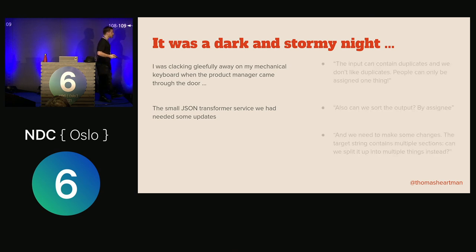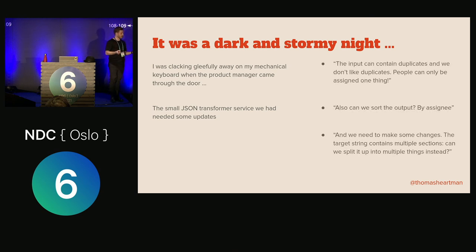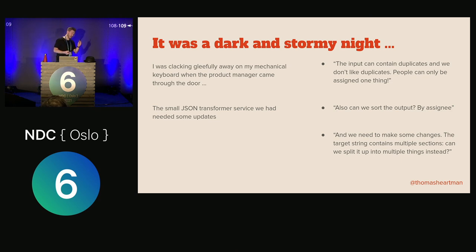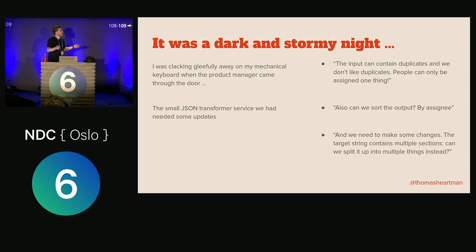But now, as product is want to do, they give you additional requirements. For the sake of this story, this piece of JSON is a list of tickets — objects that need to be done. Each ticket has a target, an ID, and an assigned-to field. The list you get in can contain duplicates, but we don't like duplicates because a person can only do one thing at a time, so it has to be deduplicated. Next, we like to sort the output — it makes it easier for people to read. Don't question it, just do it.